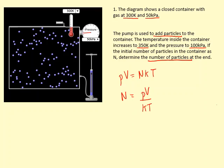In this question you can see the container is a fixed volume so I can ignore V. I can ignore the constant as well. So the number of particles is going to be proportional to pressure and inversely proportional to absolute temperature.